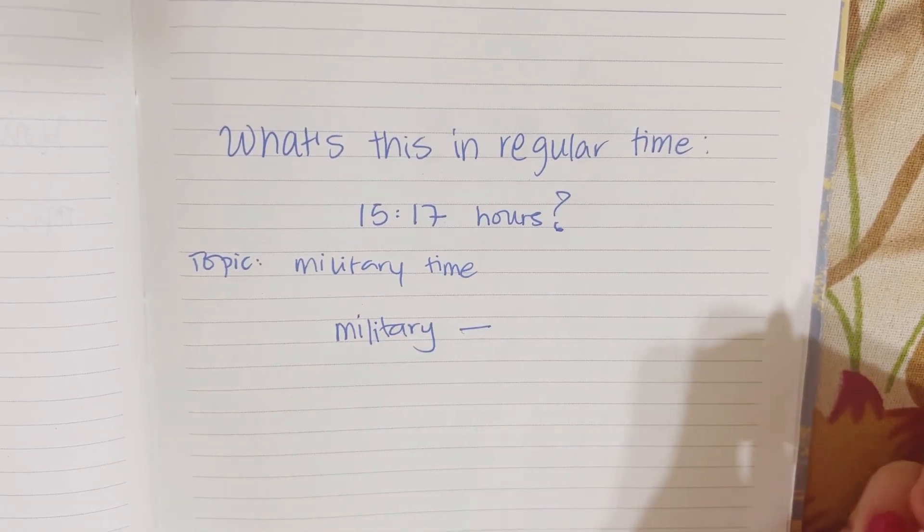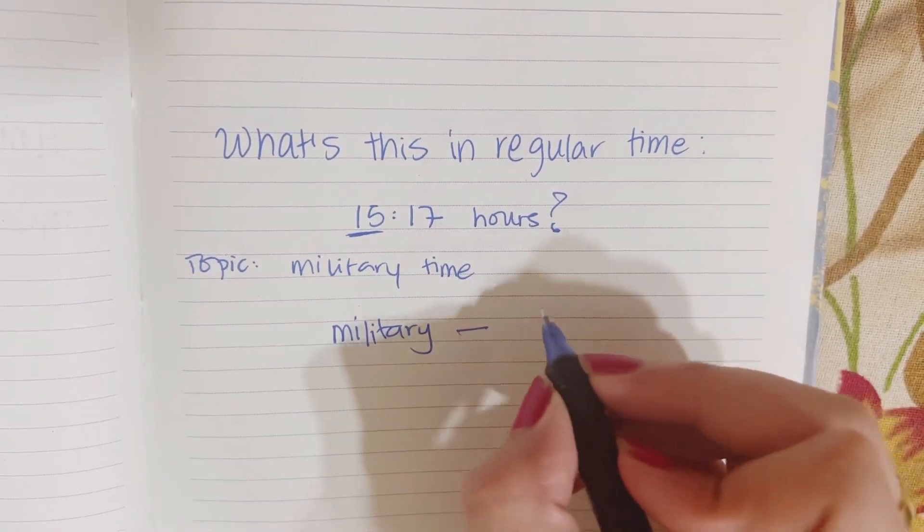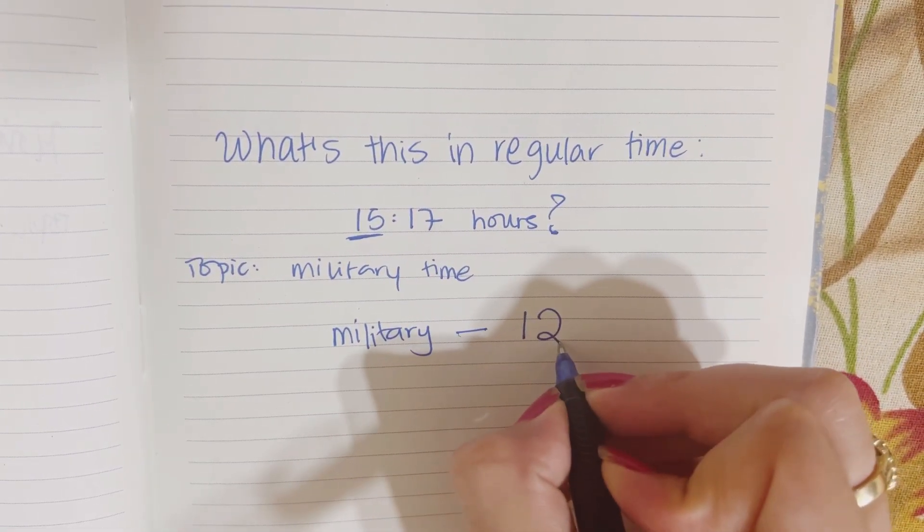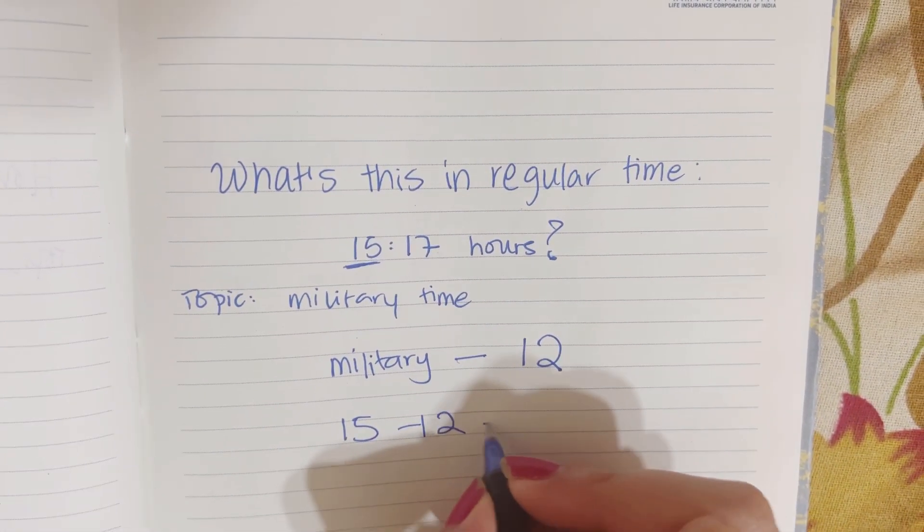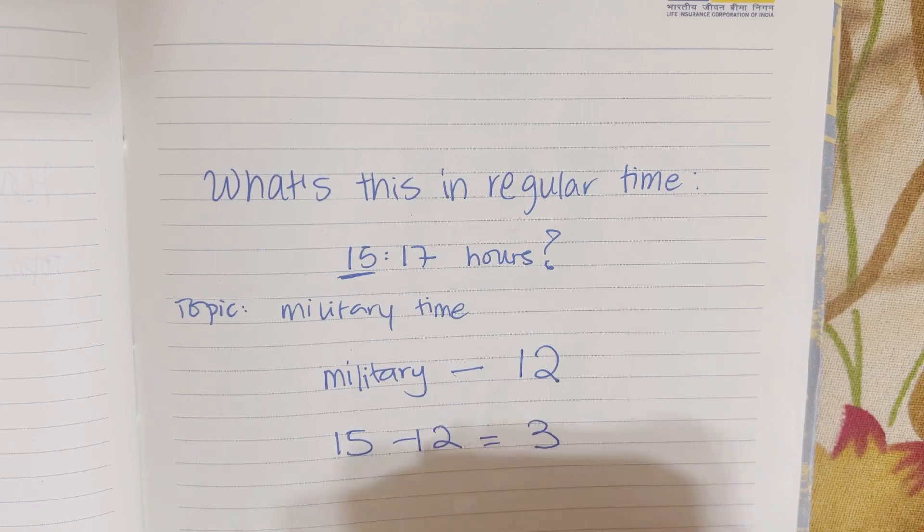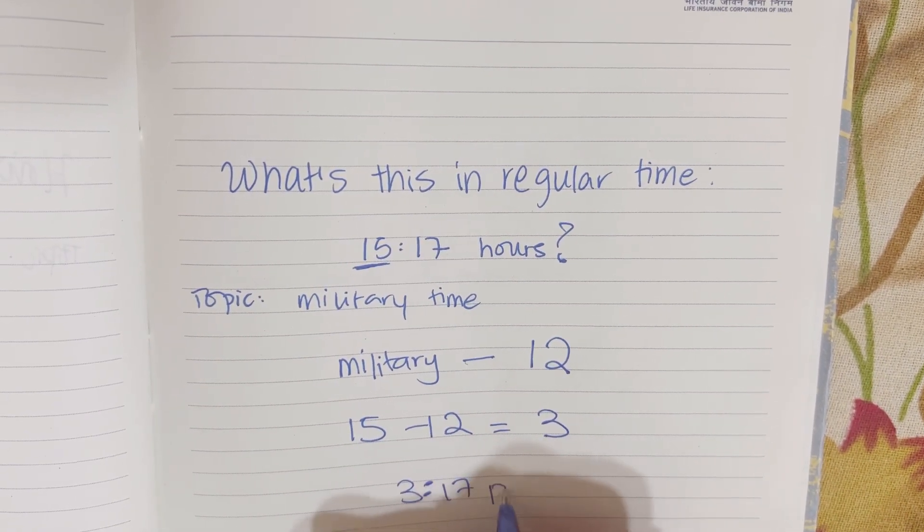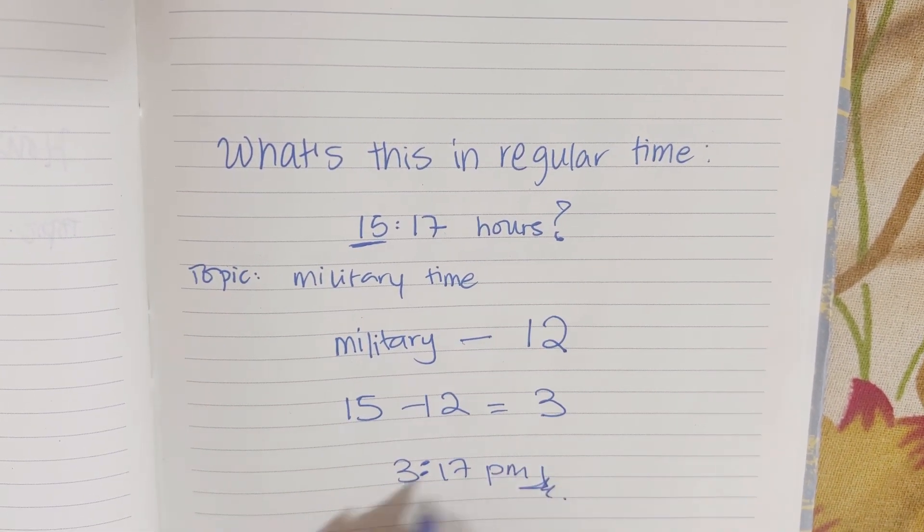Obviously the hours, you subtract it from 12. So you're going to do 15 minus 12, which is 3. So it will be 3:17 PM. That's the time.